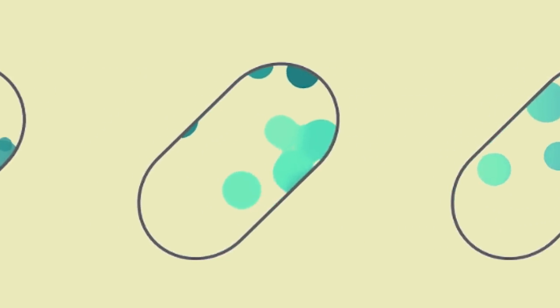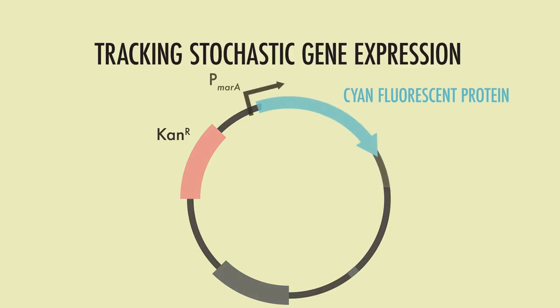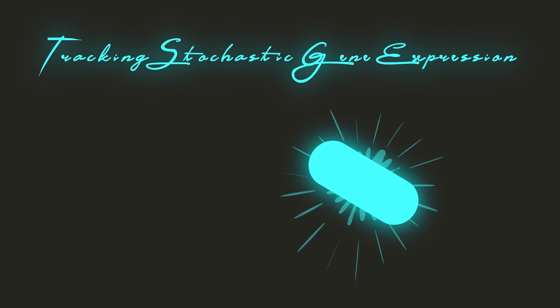For this, we typically use fluorescent reporter plasmids. Plasmids are circular pieces of DNA that we can engineer to contain whatever we want to. In this case, we put a fluorescent protein controlled by the promoter of a particular gene, so that whenever the gene fires, it will produce a fluorescent protein that we can visualize. We then put this plasmid into the bacteria, so that the brighter they glow, the more active they are for that particular gene.